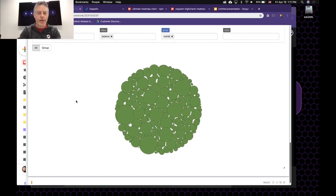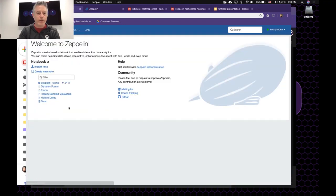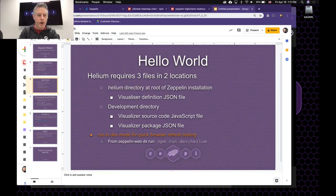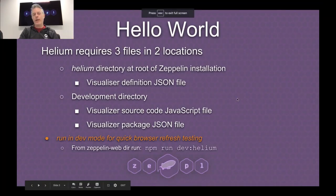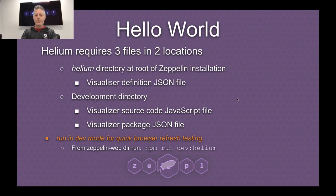That was an example of a couple of different pre-built visualizers that you can enable from within Zeppelin. Now I'd like to move on to a 'Hello World' example. Programmers always like to start with a hello world for any new programming language or platform. I'm new to Helium myself, and it's been a long time since I've coded in JavaScript - mainly Python for the last many years.